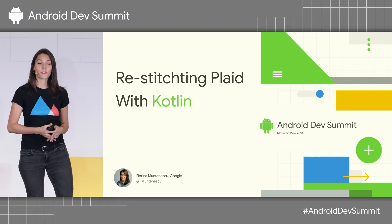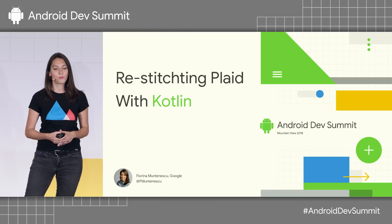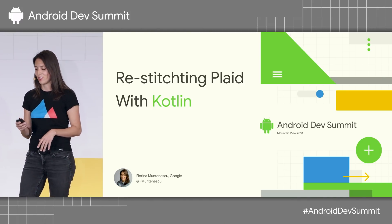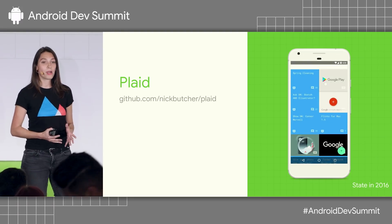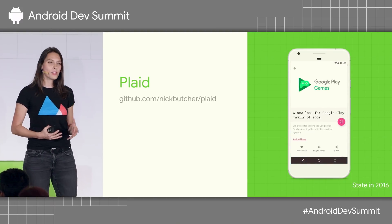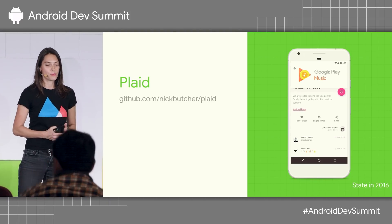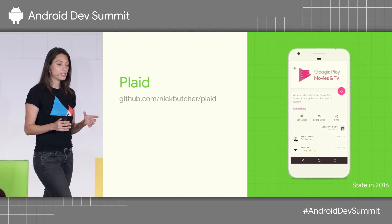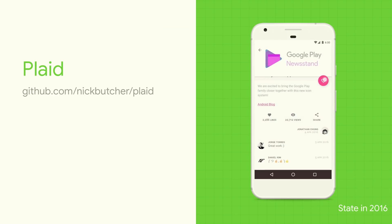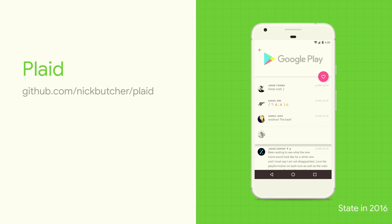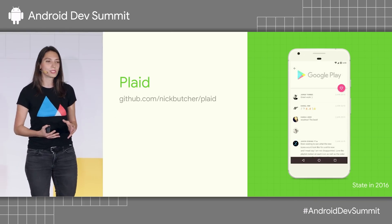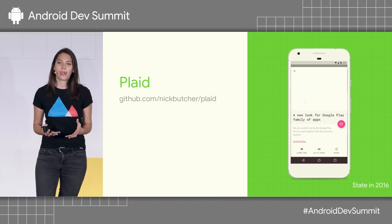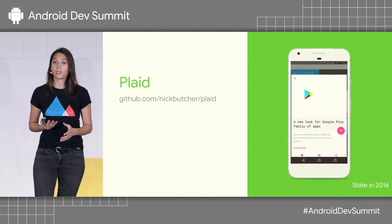In the last few months, together with three of my colleagues, we've been working on bringing Plaid back in fashion. Plaid is an application that was initially developed by my colleague Nick Butcher as a way of showcasing material design. What you see here is actually the state of the app in 2016, which was pretty much Plaid's glory days. Nick used a lot of the APIs from animations, transitions, and animated vector drawables, which really made the app shine and improved the user experience.